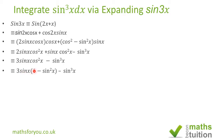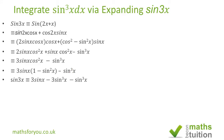We then substitute cos squared x with 1 minus sine squared x, giving us 3 sine x times (1 minus sin squared x) minus sin cubed x. If we expand this bracket we have 3 sine x minus 3 sine cubed x minus sine cubed x, and those two give us 4 sine cubed x. So sine 3x equals 3 sine x minus 4 sine cubed x.